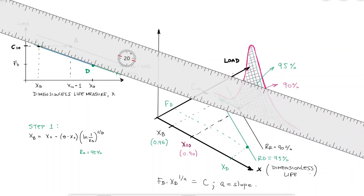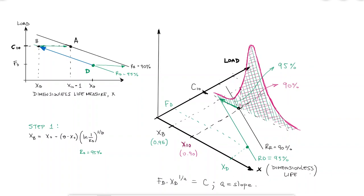Going from D to B would be achieved by using the concepts we used during the last video, knowing that on the same line, F times L to the 1 over A is constant, or in this case F times X to the 1 over A since we're using the dimensionless life measure X instead of L.